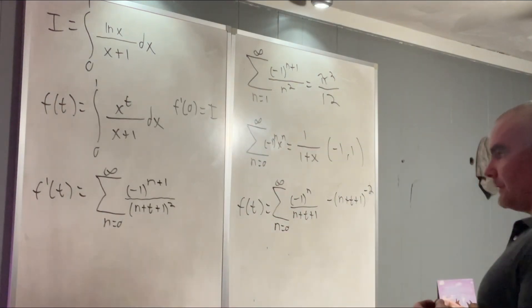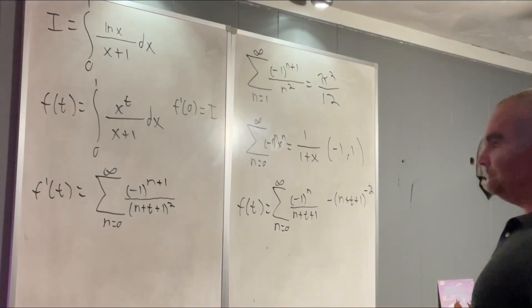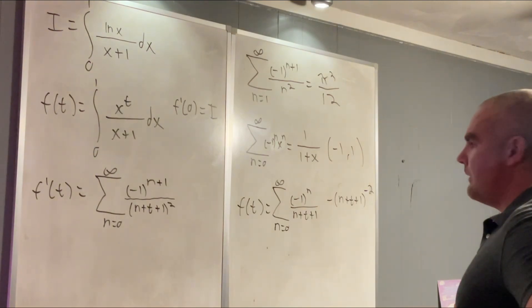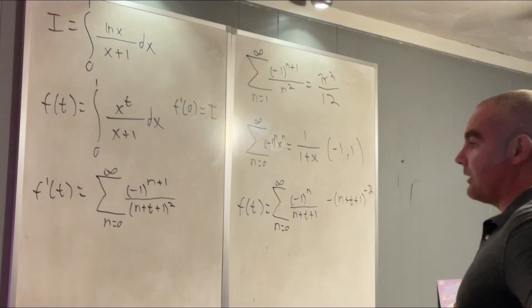And then we have to take care of that negative sign and we'll take care of that by just adding 1 right there. Okay. All right. There we go. We have our f prime of t.